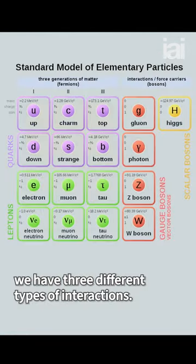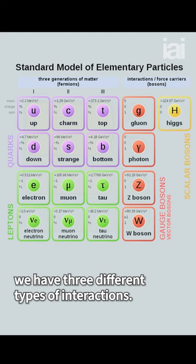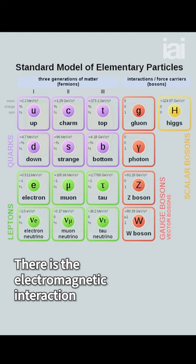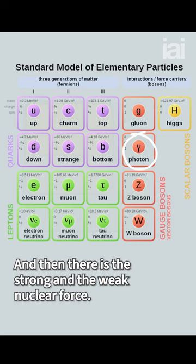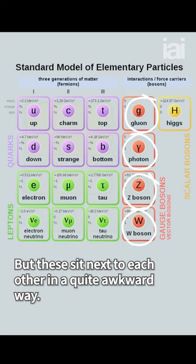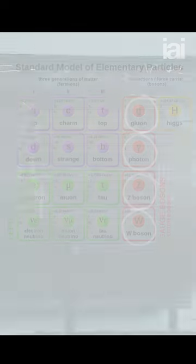For example, in the standard model we have three different types of interactions. There is the electromagnetic interaction that most of you would probably have heard of, and then there is the strong and the weak nuclear force, but these sit next to each other in a quite awkward way.